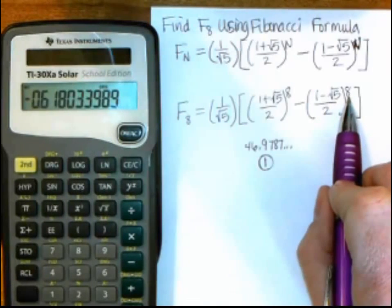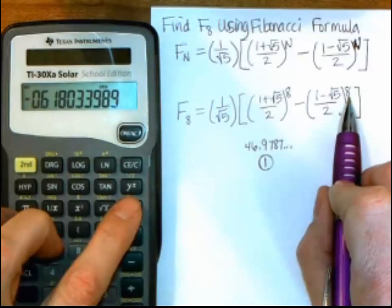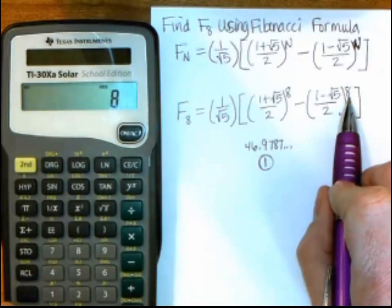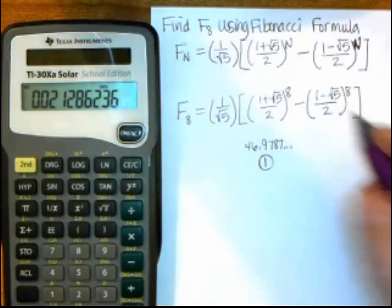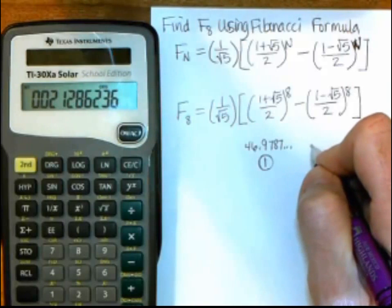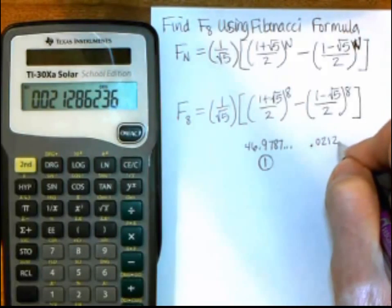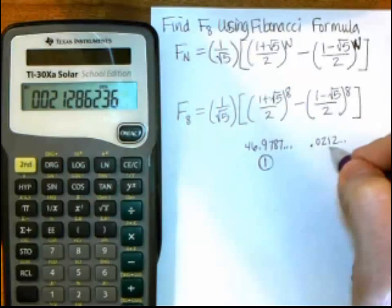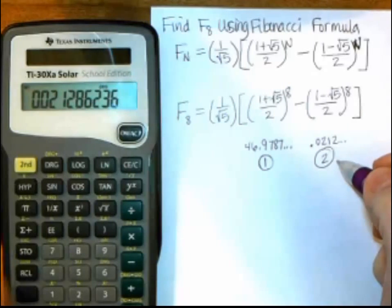And then raise it to the 8th power, so my to the button again, to the 8th, equals again. And now I have 0.0212, and it goes on, and I'm going to store that in bin 2.